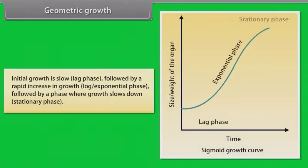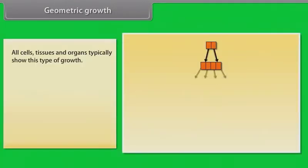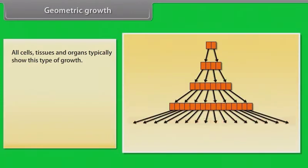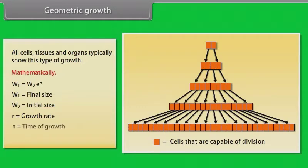Geometric growth: initial growth is slow, followed by a rapid increase in growth, followed by a phase where growth slows down. All cells, tissues and organs typically show this type of growth. Mathematically, W1 equals final size, W0 equals initial size, R equals growth rate, T equals time of growth, E equals base of natural logarithms.